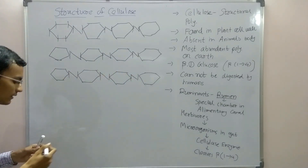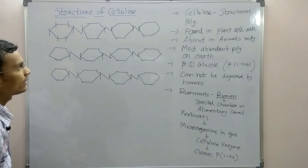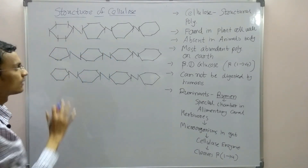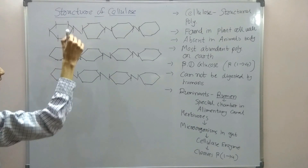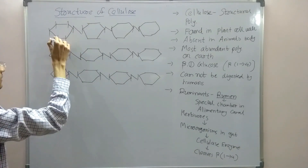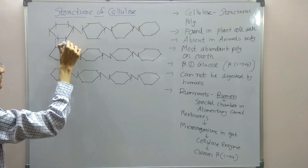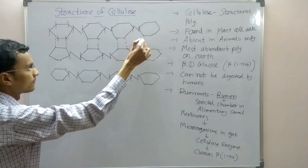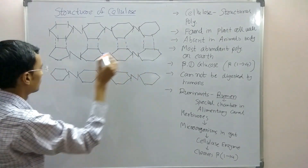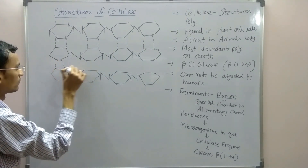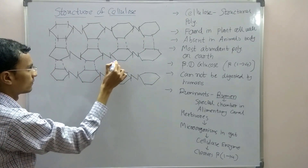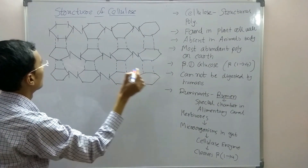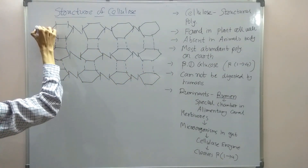There are hydrogen bonds between the two chains of cellulose. This is one cellulose chain, this is the second, and this is the third. Between the parallel chains, hydrogen bonds are formed — these dotted lines represent the hydrogen bonds.